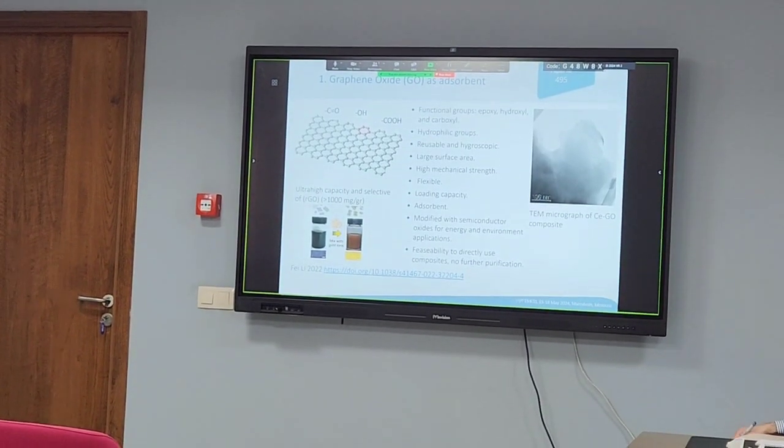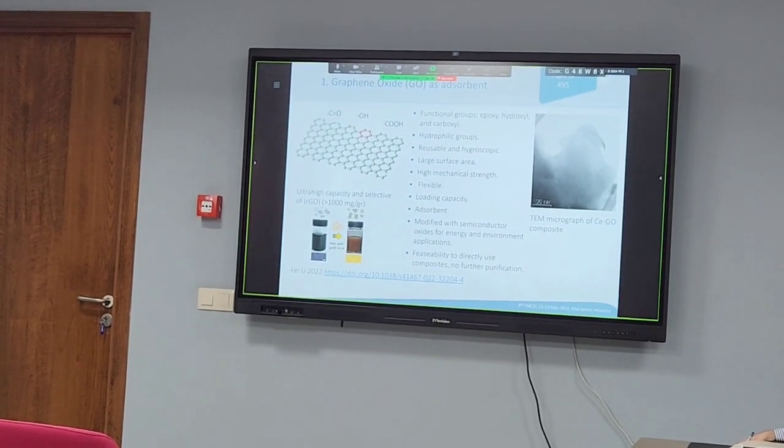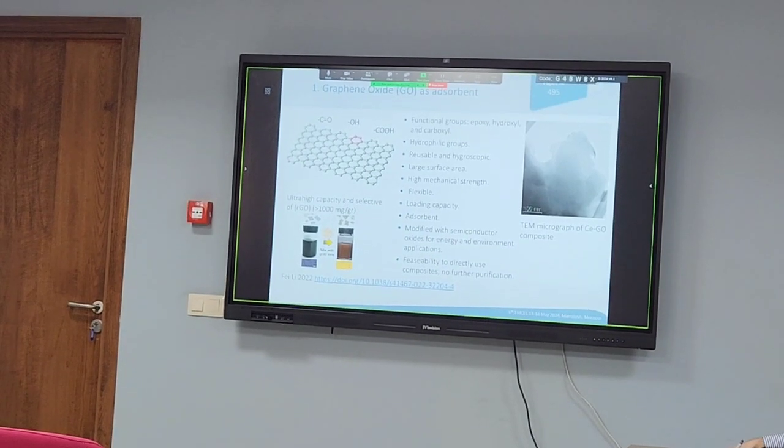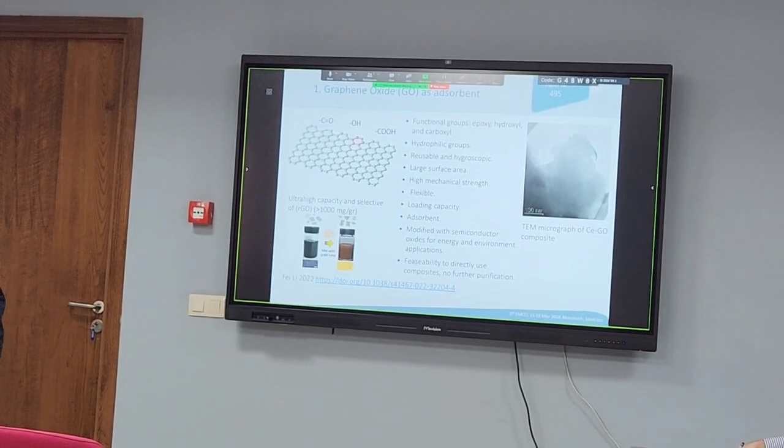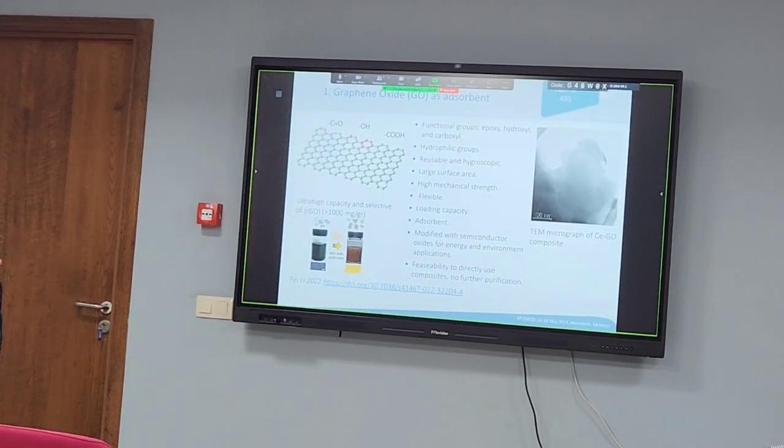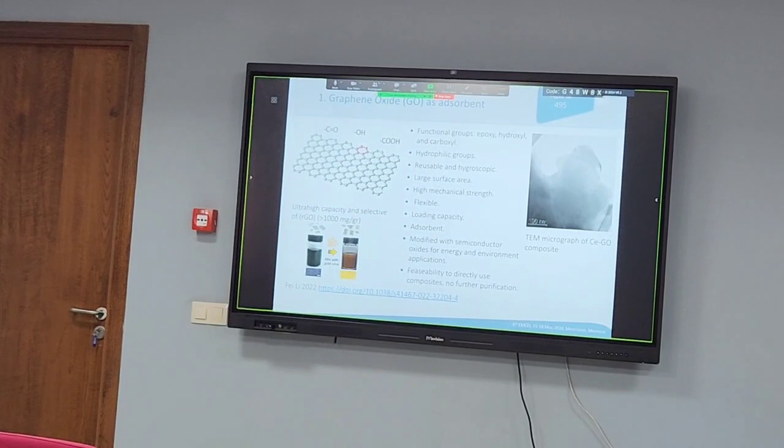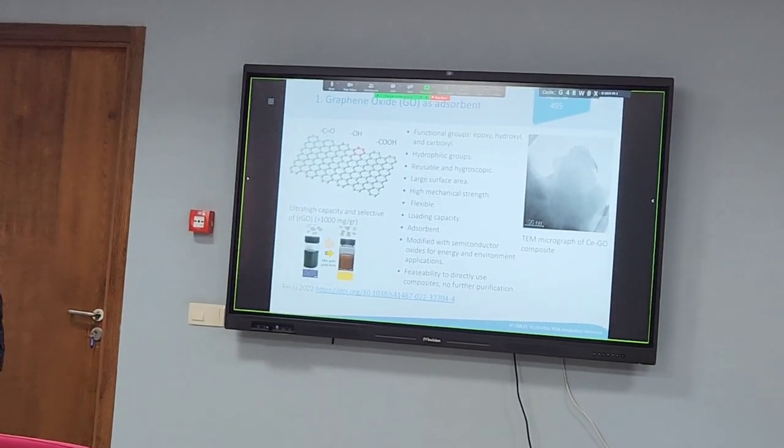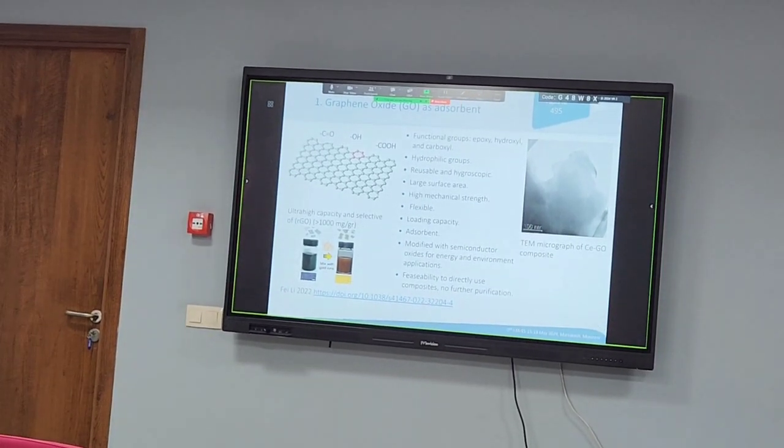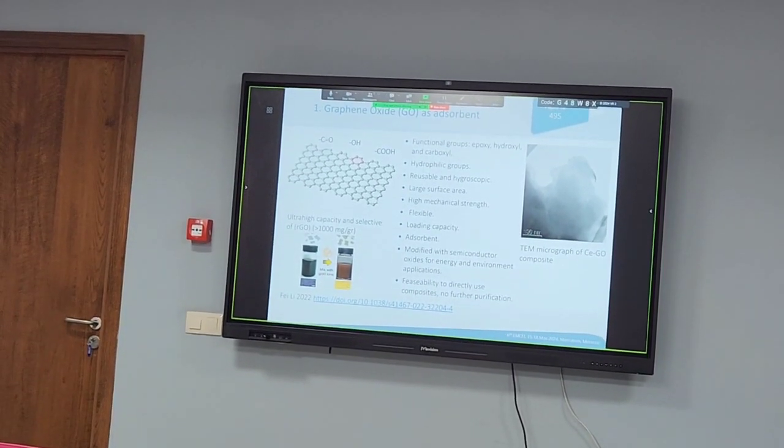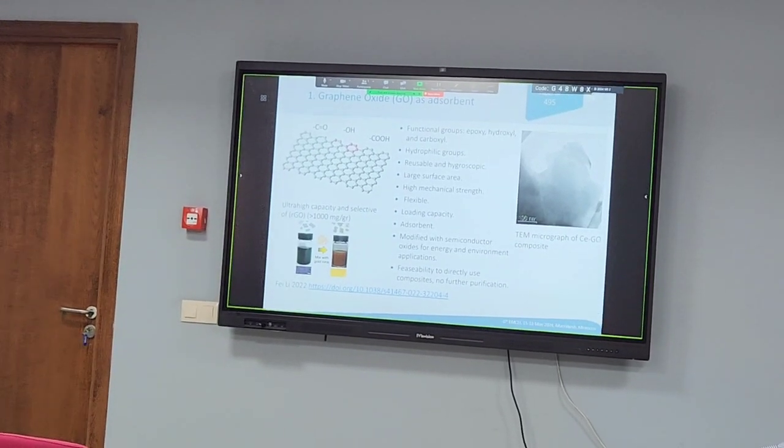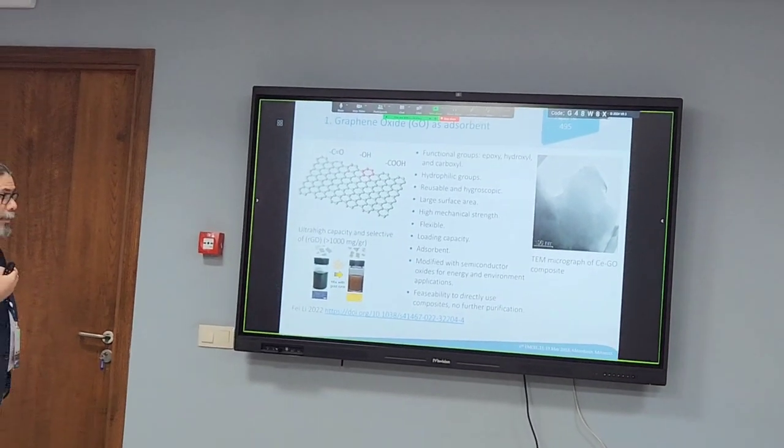This is our first approach. There are many approaches to recover electronic waste such as hydrometallurgic or pyrometallurgic strategies, but we are trying to use graphene oxide as an absorbent material because it contains a lot of oxygen moieties such as carboxyl, carbonyl, and hydroxyl moieties.